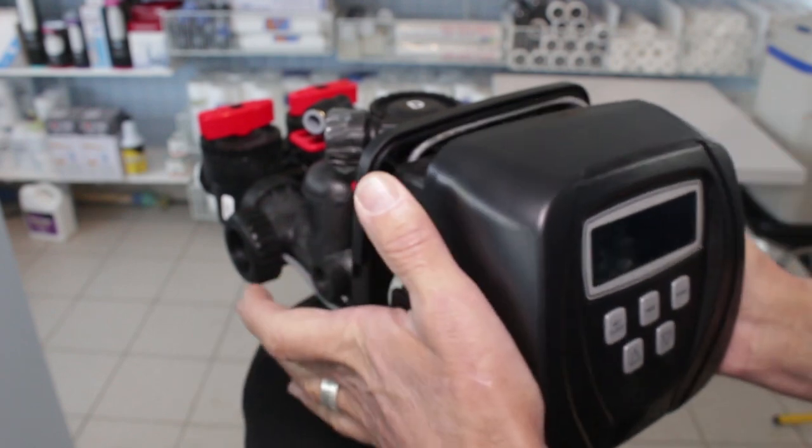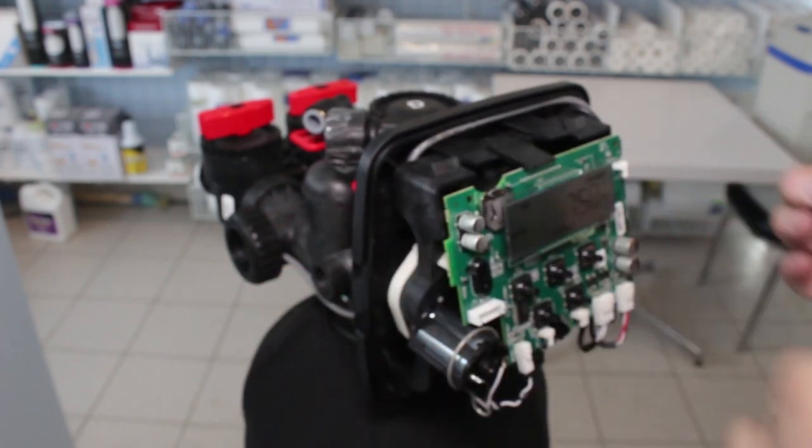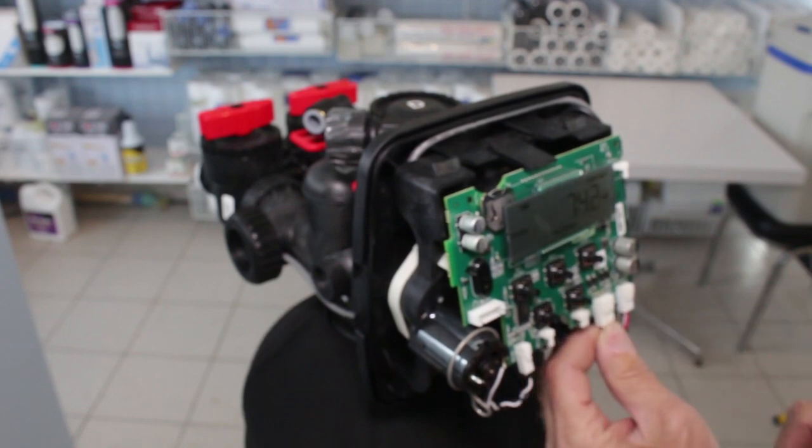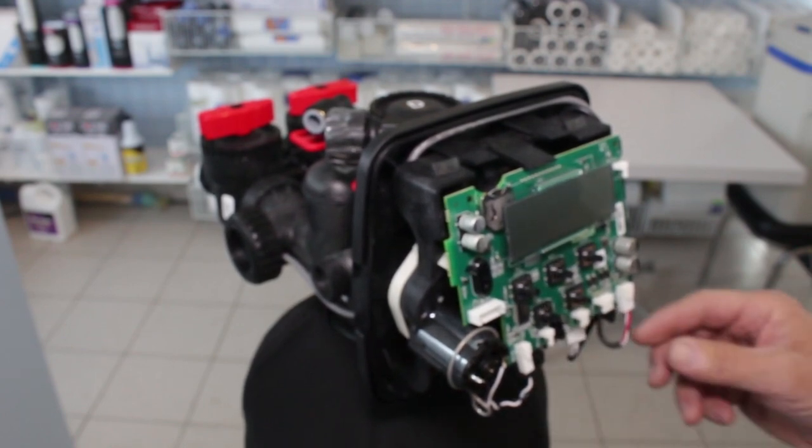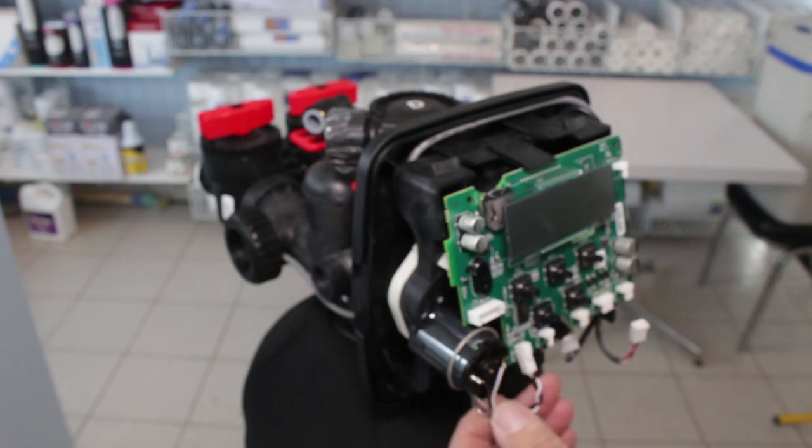Then we're going to remove the face plate. Grab it on both sides at the back and pull that off. Now we're going to disconnect the power, which is right here, so we just pull that down. Then you can disconnect the meter and the motor can actually stay connected.